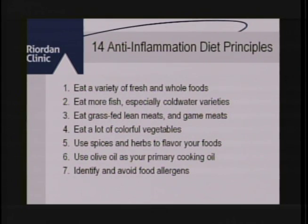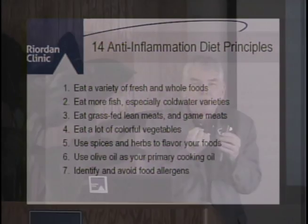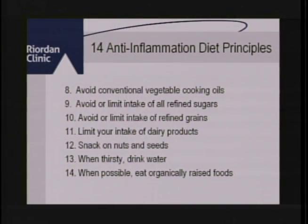Fourteen anti-inflammatory dietary principles: eat a variety of fresh and whole foods; eat more fish, especially cold water varieties; eat grass-fed lean meats and game meats; eat lots of colorful vegetables; use spices and herbs to flavor your foods; use olive oil as your primary cooking oil — it's an omega-9 that does not trigger inflammation; identify and avoid food allergens; avoid conventional vegetable cooking oils rich in omega-6; limit refined sugars, refined grains, and dairy products; snack on nuts and seeds; when thirsty, drink water; and when possible, eat organically raised foods.